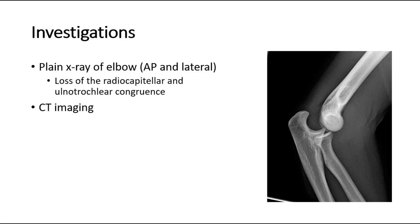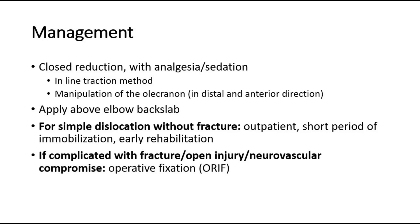This is a picture showing the lateral view of a plain X-ray of a dislocated right elbow. For management, initial management following examination and documentation of neurovascular status requires closed reduction. Ensure sufficient analgesia and sedation if appropriate, and apply an above-elbow backslab once reduced to keep the elbow at 90 degrees.